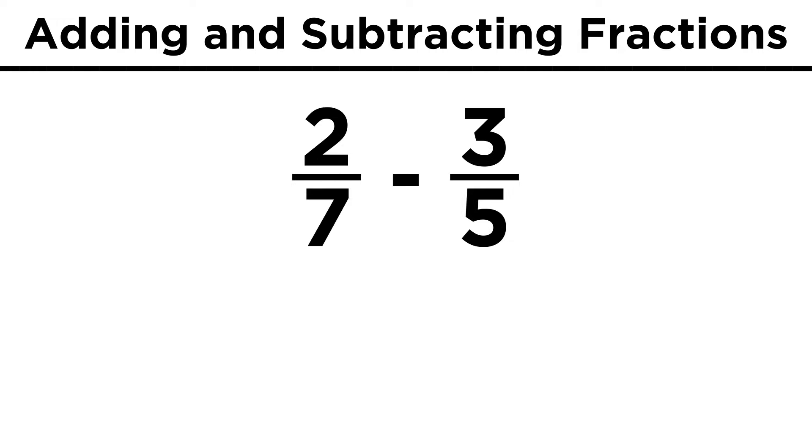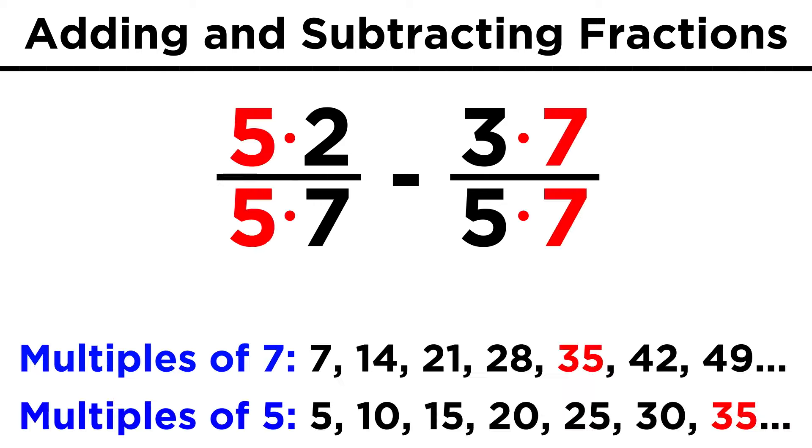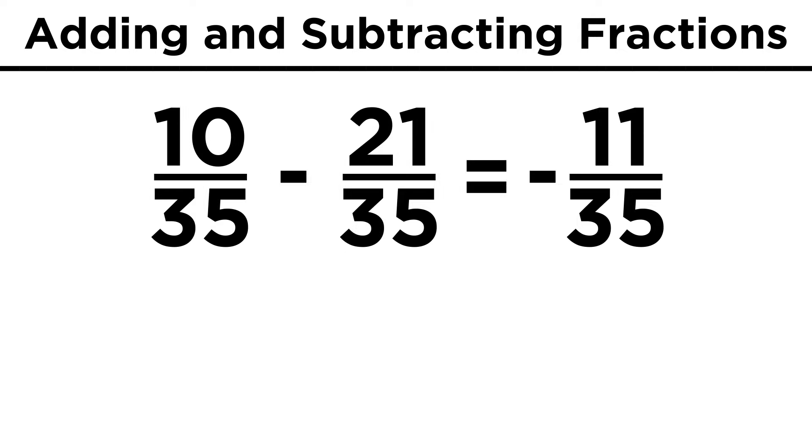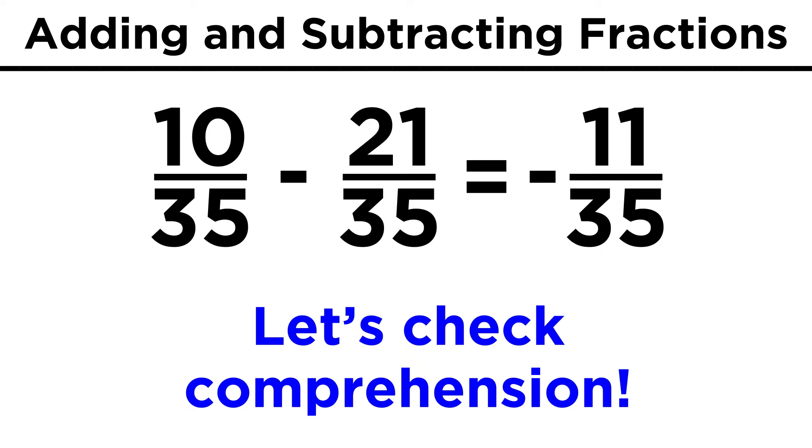Now try two-sevenths minus three-fifths. The least common multiple is thirty-five, so this will become ten over thirty-five minus twenty-one over thirty-five, giving us negative eleven over thirty-five. You may want just a little more practice on your own, so let's check comprehension.